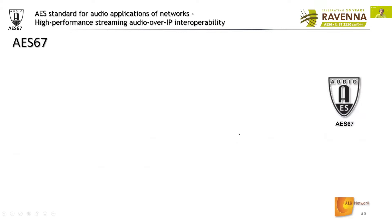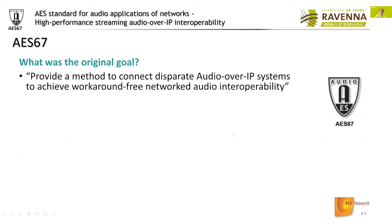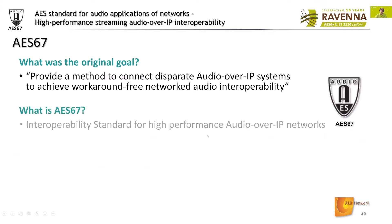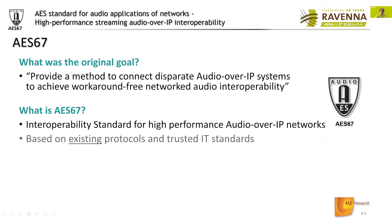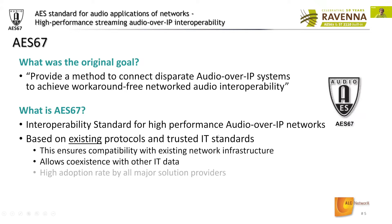Let's have a quick look at AES67. The original goal of AES67 is to provide a method of making disparate audio over IP systems interoperable with each other. It's a standard called the interoperability standard for high-performance audio over IP networks. Importantly, AES67 has not invented anything new — it's based on existing protocols and trusted IT standards, looking at what is suitable to comprise an interoperability standard for AoIP.